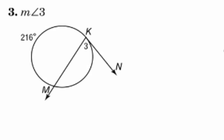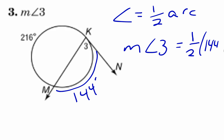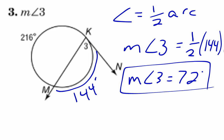On number three, we have another intersection on the circle, so the angle is half of the arc. I need the arc the angle opens up to, but I know the arc on the other side is 216. Since the full circle is 360 degrees, 216 plus what gives 360? That number is 144 degrees. So the measure of angle three is half of 144 degrees. Make sure you use the correct arc — don't use half of 216.